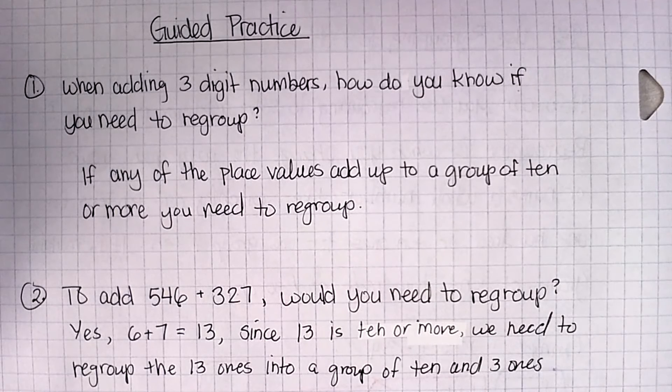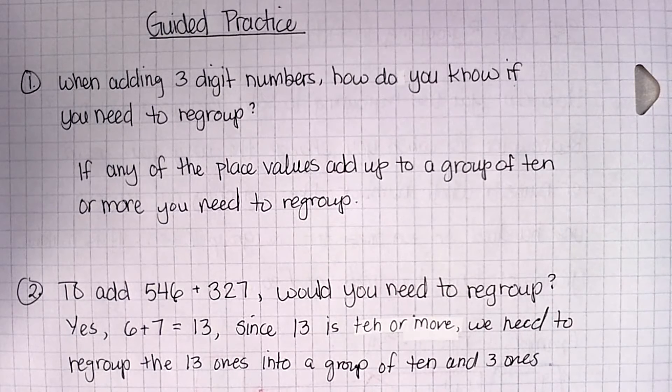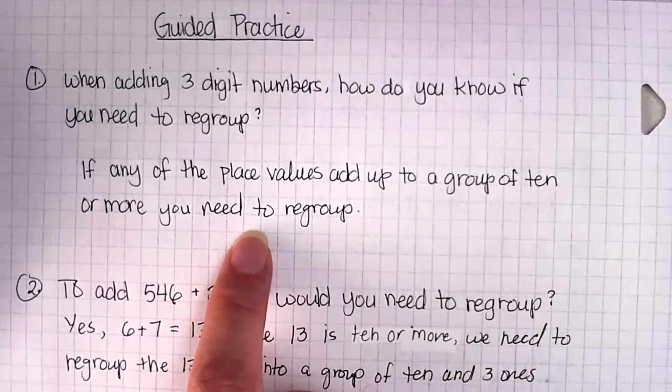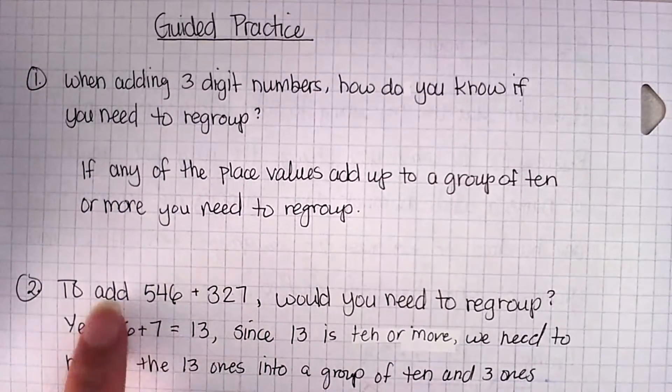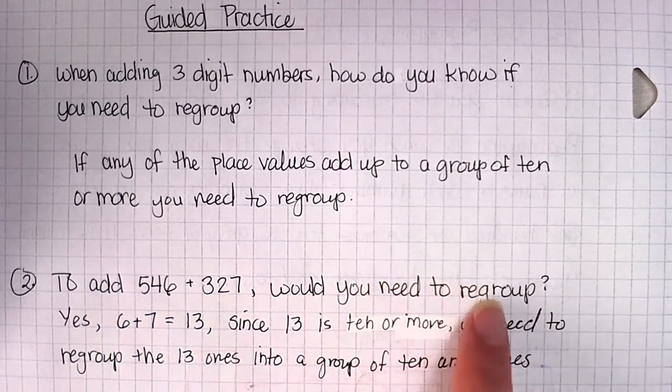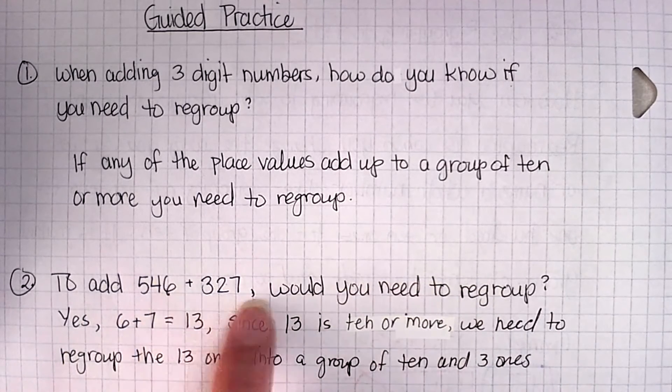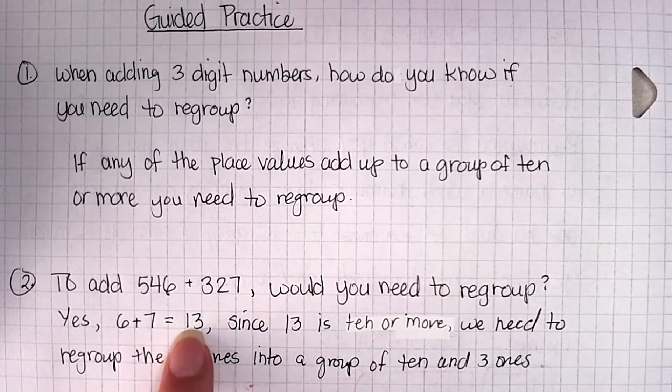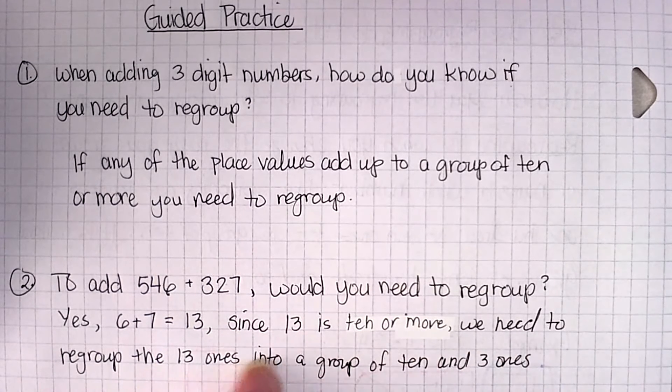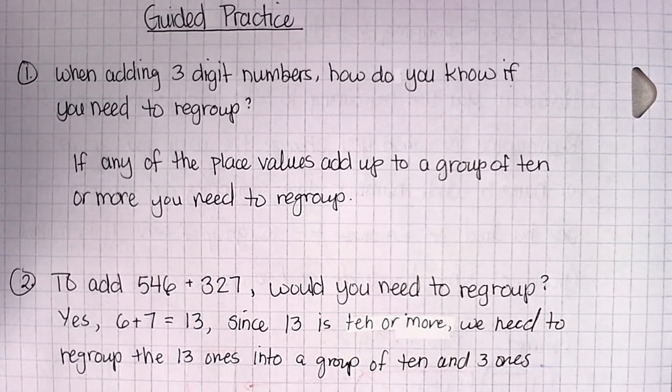When adding three-digit numbers, how do you know if you need to regroup? Well, we know we need to regroup if any of the place values adds up to a group of 10 or more. That tells us that we need to regroup. Number 2 says to add 546 plus 327. Would you need to regroup? So the answer here is yes, because 6 plus 7 is going to give us 13. Since 13 is 10 or more, we need to regroup the 13 ones into a group of 10 and 3 more ones before we can continue with the addition.